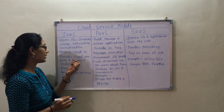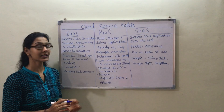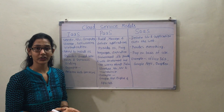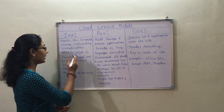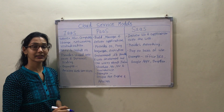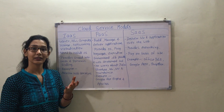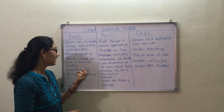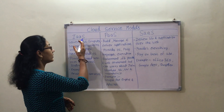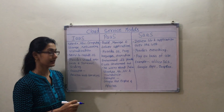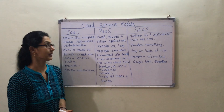IaaS also provides shared resources without revealing details like location and hardware to the clients. It also provides dynamic scaling, so if users need more resources they can access them on short notice. An example of IaaS is Amazon Web Services.